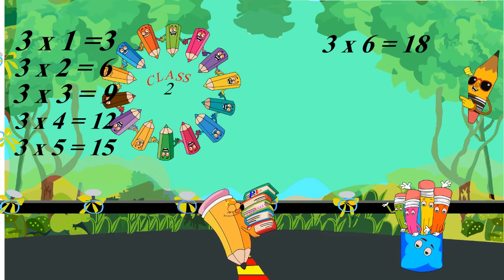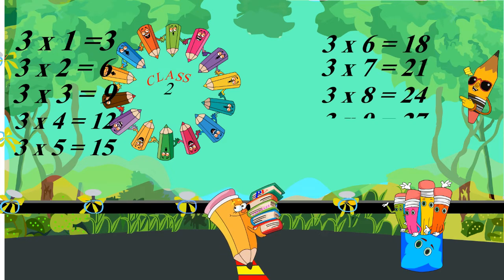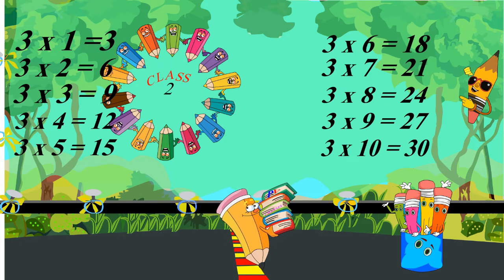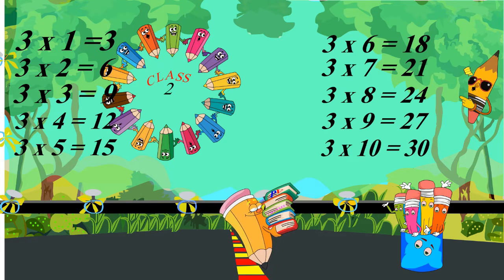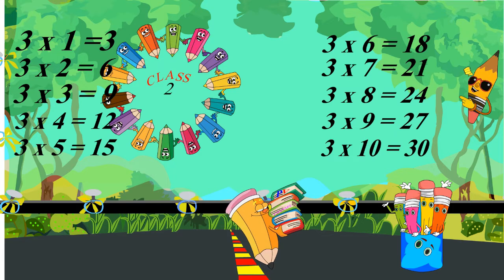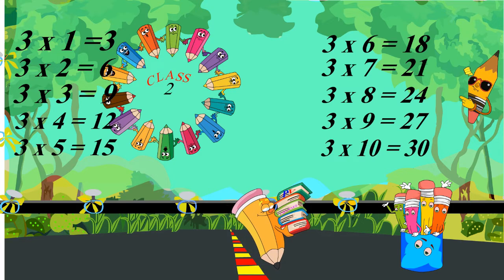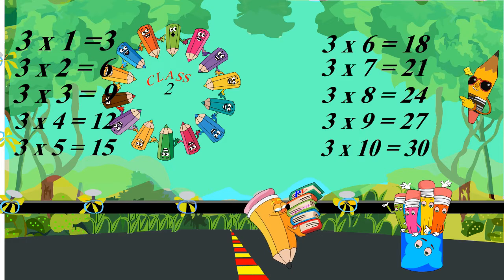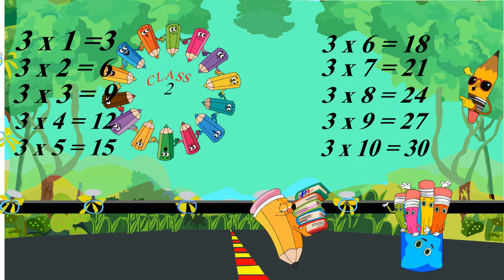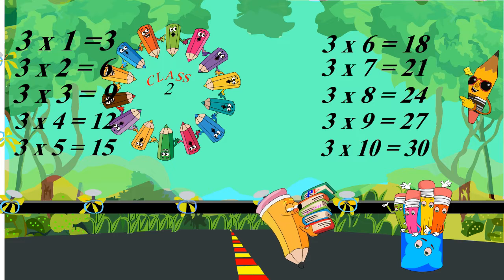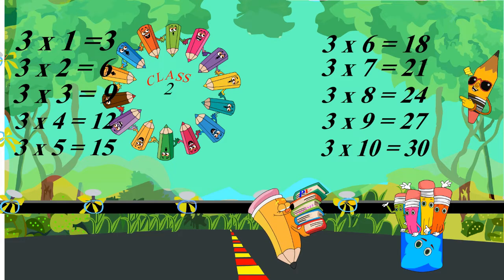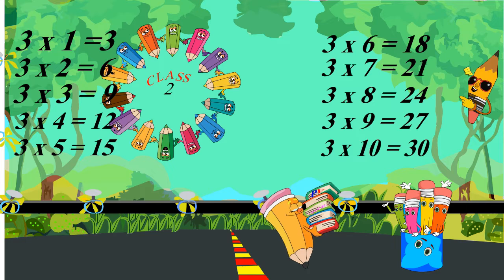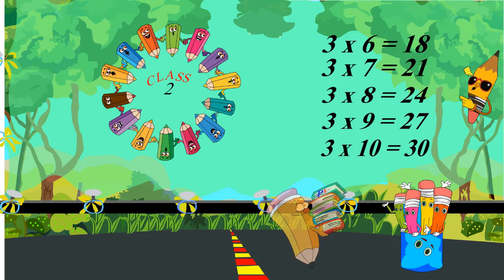3 sixes are 18. 3 sevens are 21. 3 eights are 24. 3 nines are 27. 3 tens are 30.